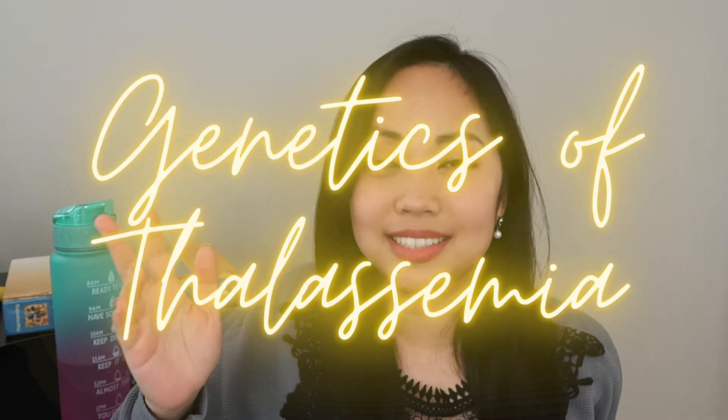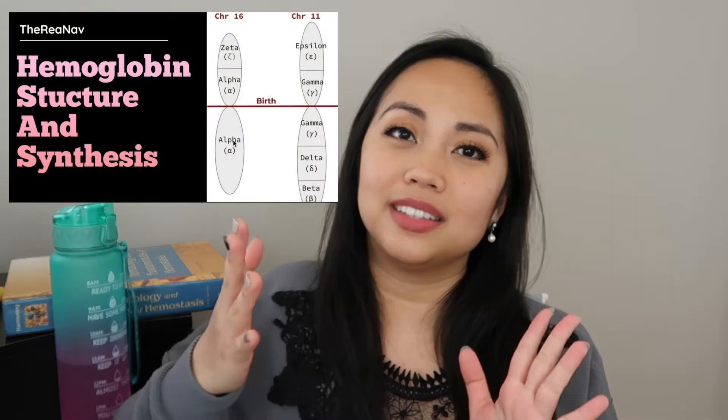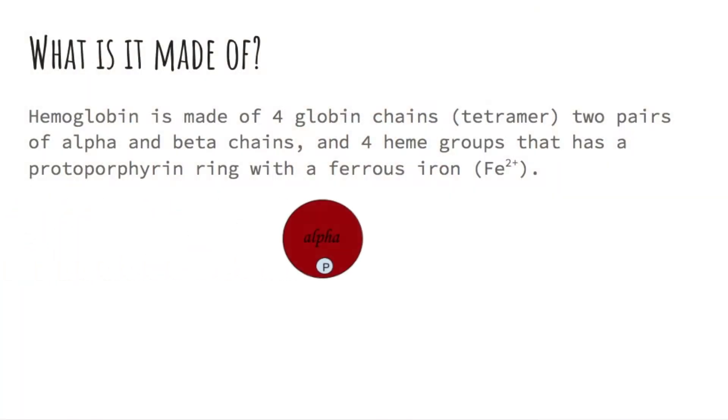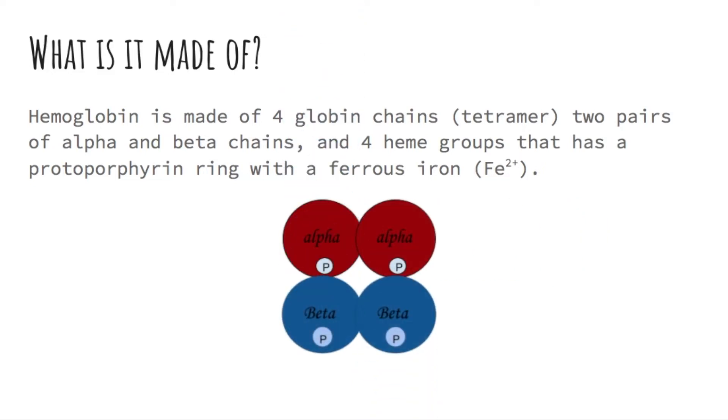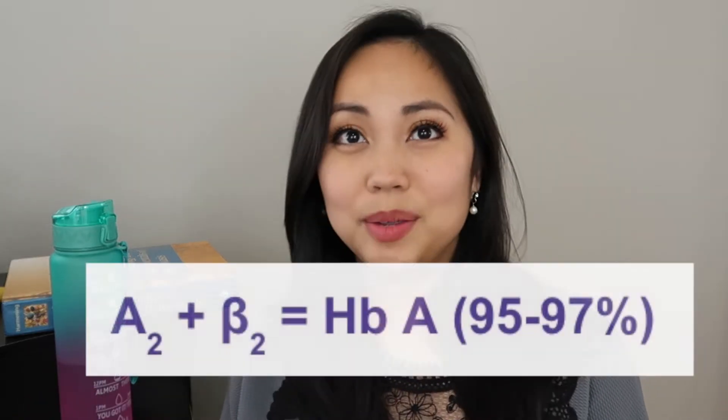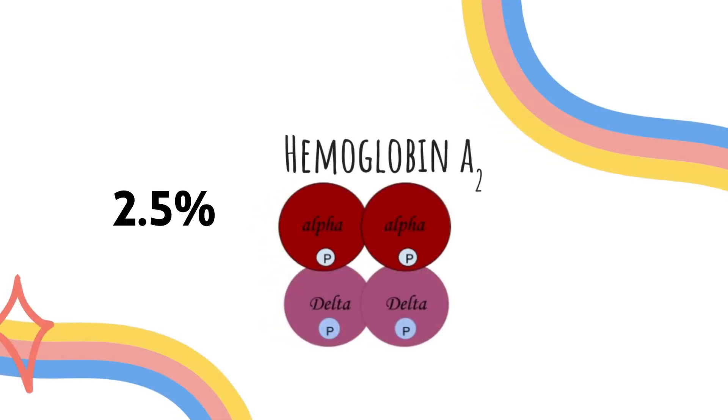As you may remember from hemoglobin synthesis, we need two alpha chains and two beta chains to create the heme structure. This is where it gets a bit complicated — we're going to talk about the genetics of the disease. I would highly advise you to go back to my hemoglobin synthesis video. What to take away is that to make a normal hemoglobin structure you need two alpha chains and two beta chains, and a normal adult will usually have 95 to 97 percent of hemoglobin A, which is made out of two alpha and two beta chains.